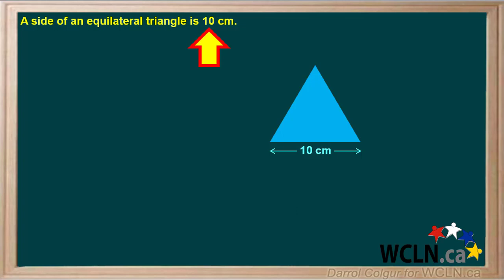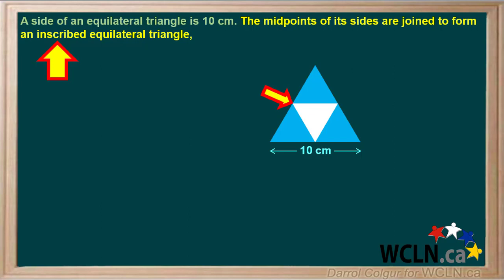We're told that the side of an equilateral triangle is 10 centimeters. The midpoints of its sides are joined to form an inscribed equilateral triangle, as shown by the white triangle in the diagram, and this process is continued.